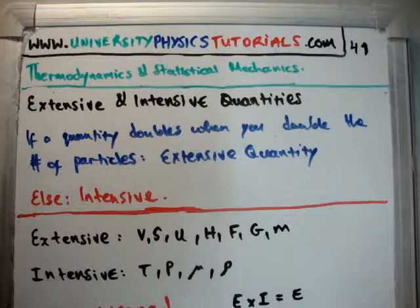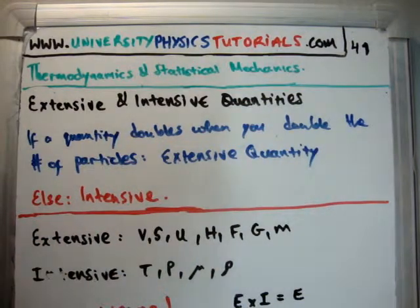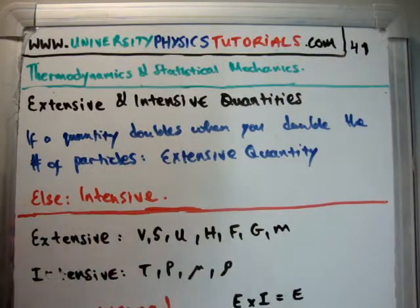So, by definition, if a quantity doubles when you double the number of particles, we call it an extensive quantity. In the language of computing, we would say then that everything else is intensive.